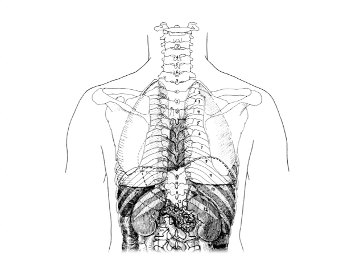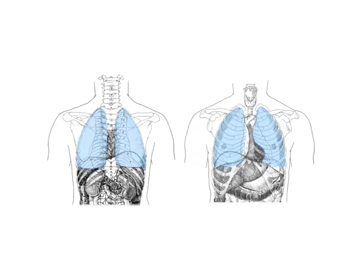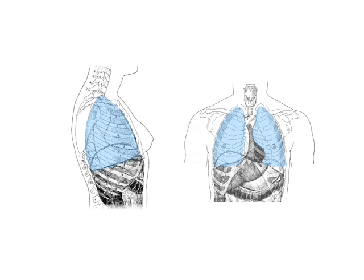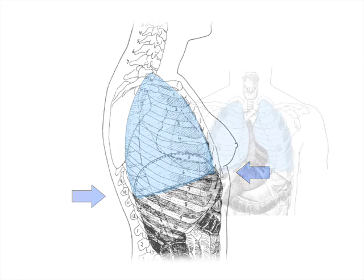Let's start by looking at the most important feature of the respiratory system, the lungs. Here they are as seen from the back, the front, and the side. Notice that the top of the lungs is above the collarbone — notice how high in the torso this is. The bottom of the lungs is about at the bottom of the sternum in front and a little lower in back.